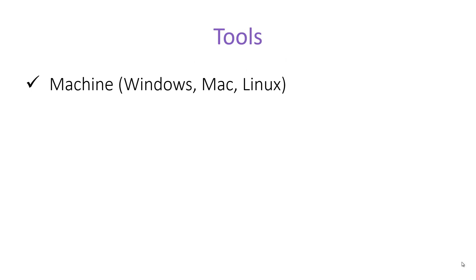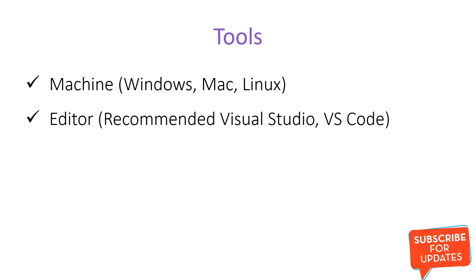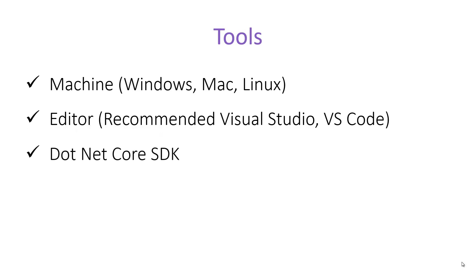First, we need a machine. You can use Windows, Mac, or Linux operating system. Then we need an editor. You can use any editor of your choice, but for .NET Core application development, the recommended editors are Visual Studio and VS Code. However, these are not mandatory — you can use any editor of your choice. Third, and most importantly, we need the .NET Core SDK. The .NET Core SDK is a Software Development Kit and it is required for the development and running of applications in our system.